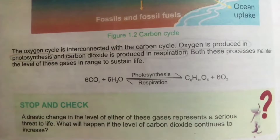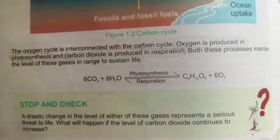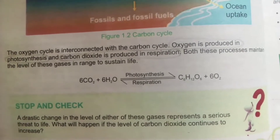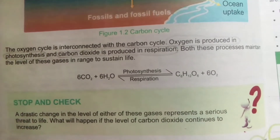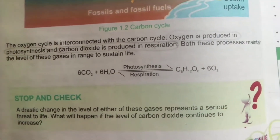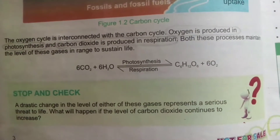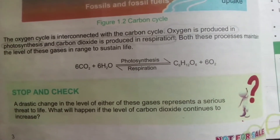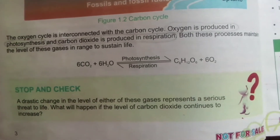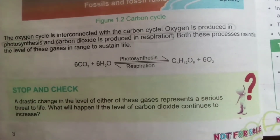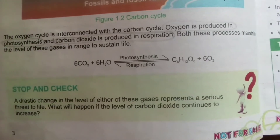Oxygen is produced in photosynthesis and carbon dioxide is produced in respiration. These two are opposites of each other — respiration and photosynthesis. The photosynthesis reaction is shown here and it is reversible: when photosynthesis goes forward, respiration occurs in the opposite direction.